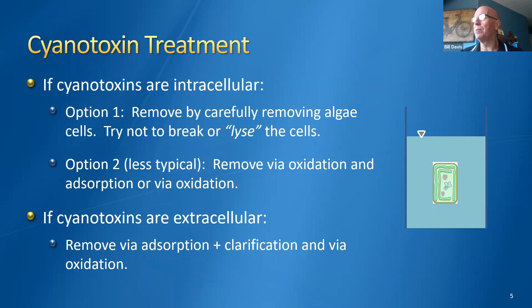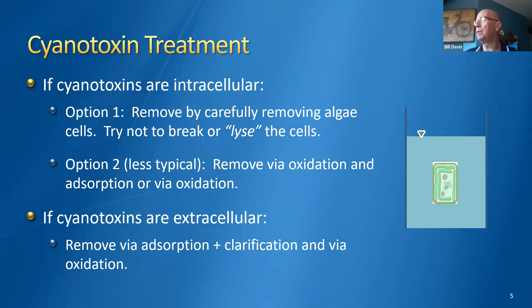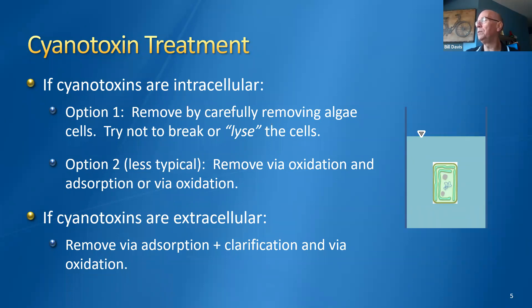If cyanotoxins are extracellular, the generally recommended treatment is adsorption onto activated carbon, then removing the carbon in the clarification process. We could also treat extracellular cyanotoxins via oxidation — adding enough oxidant to destroy the cyanotoxin and break it into smaller organic compounds that are no longer a concern.